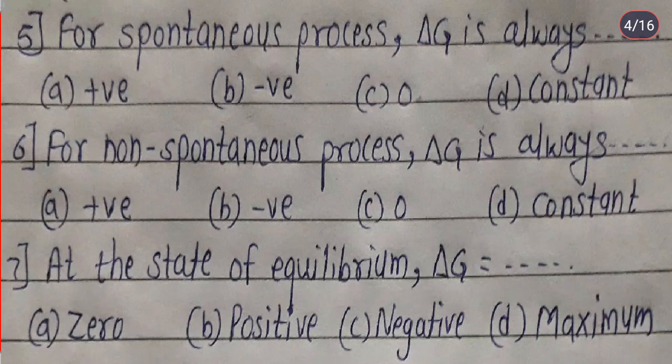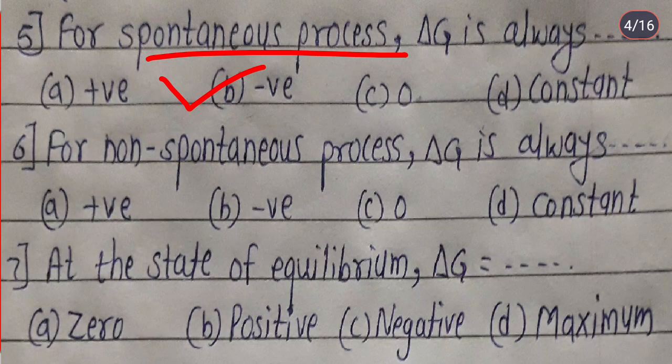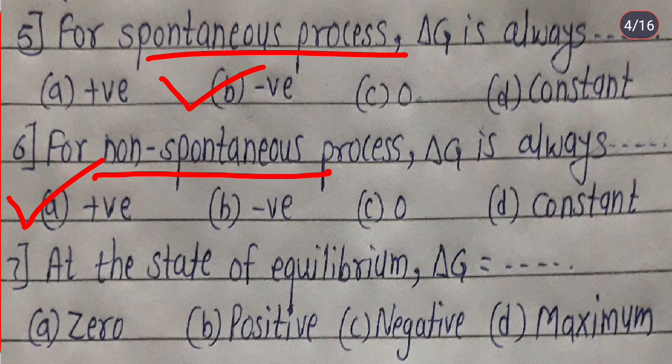For a spontaneous process — also known as an irreversible process — ΔG is always negative. For a non-spontaneous process, ΔG is always positive. At the state of equilibrium, ΔG is zero.